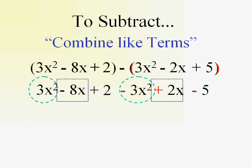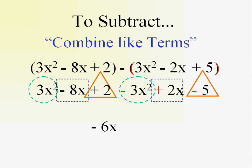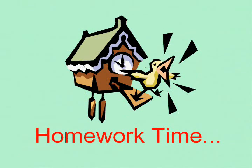Negative 8x and positive 2x is negative 6x. And positive 2 and negative 5 is a negative 3. And you got it. Okay, let's practice it. Get to that homework.